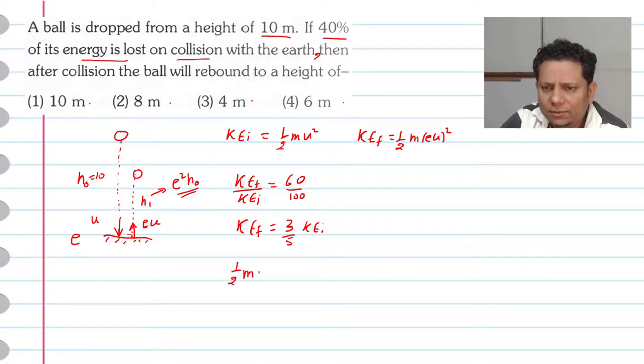We can write half m e squared u squared equals 3/5 times half m u squared. Canceling terms, we get e squared equals 3/5.